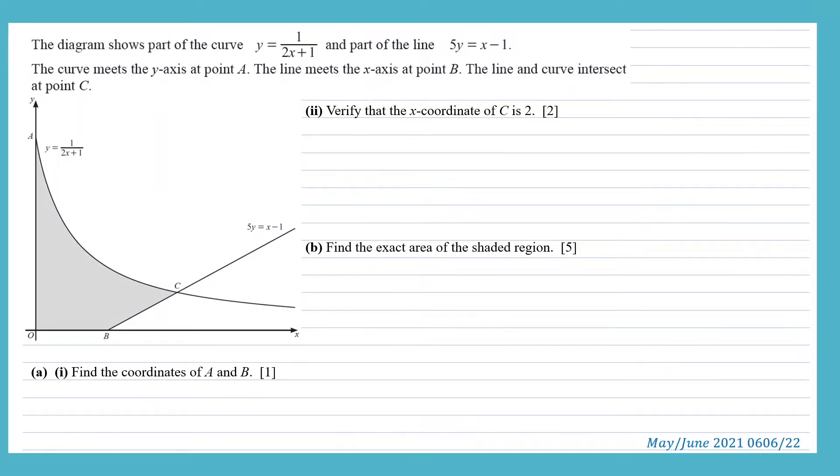Hi everyone, we have a diagram which shows part of the curve y equals 1 over 2x plus 1 and part of the line 5y equals x minus 1. The curve meets the y-axis at point A, the line meets the x-axis at point B. The line and curve intersect at point C. In the first part of the question we want to find the coordinates of A and B.